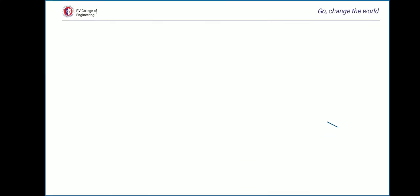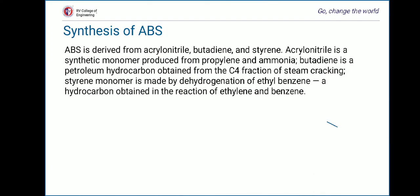Moving on to the synthesis of ABS. ABS is derived from acrylonitrile, butadiene and styrene. Acrylonitrile is a synthetic monomer produced from propylene and ammonia. Butadiene is a petroleum hydrocarbon obtained from the C4 fraction of steam cracking. Styrene monomer is made by dehydrogenation of ethylbenzene, a hydrocarbon obtained from the reaction of ethylene and benzene. Radical polymerization of styrene, butadiene and acrylonitrile gives the ABS polymer.